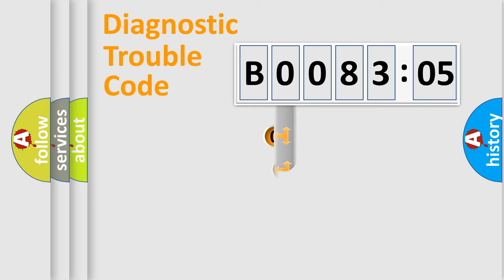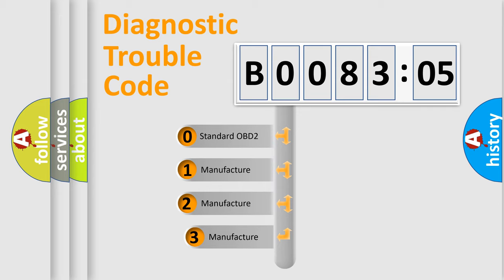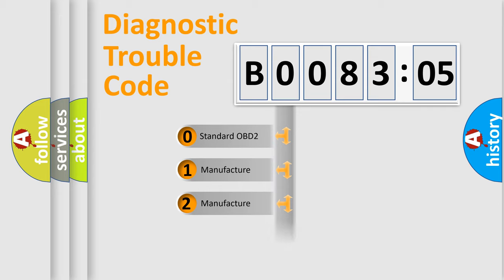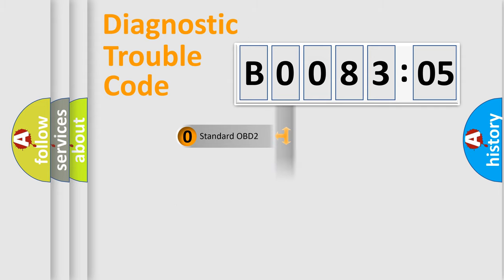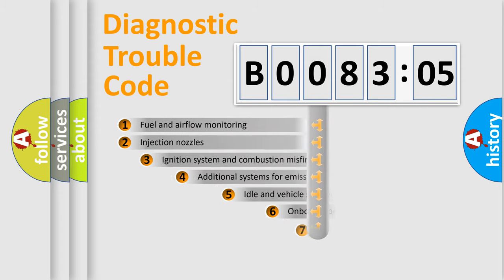This distribution is defined in the first character of the code. If the second character is expressed as zero, it is a standardized error. In the case of numbers 1, 2, or 3, it is a more specific expression of the car-specific error.